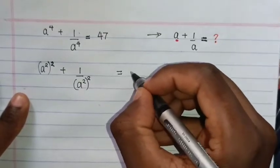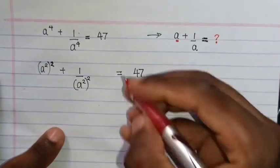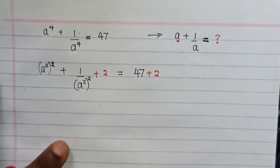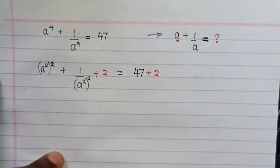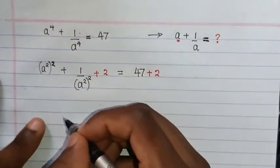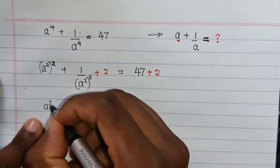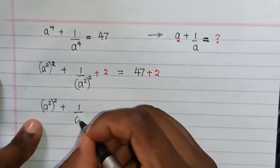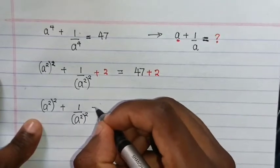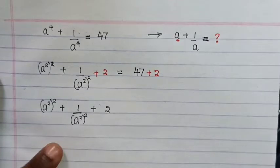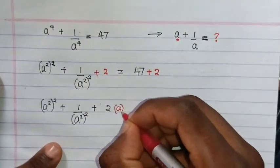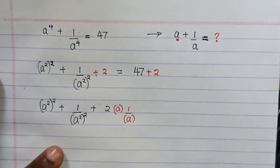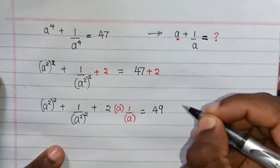Here it goes to 47, then add 2 and then add 2, so it becomes 49. Then find the square root. So we have a squared plus one over a squared plus 2, which is the same as writing a over one over a, and this equals 49.